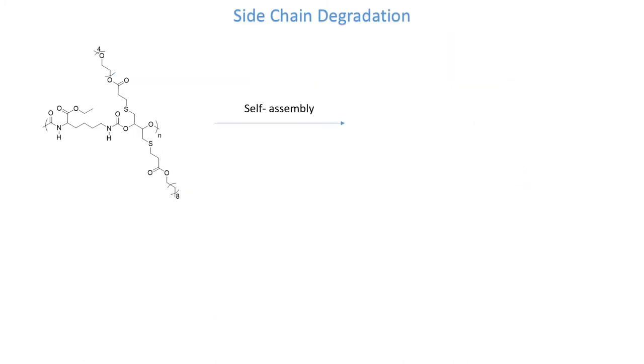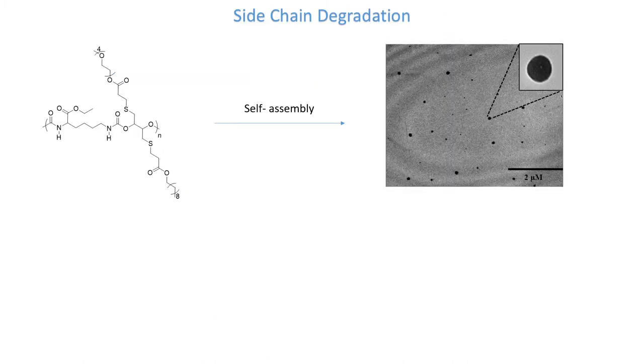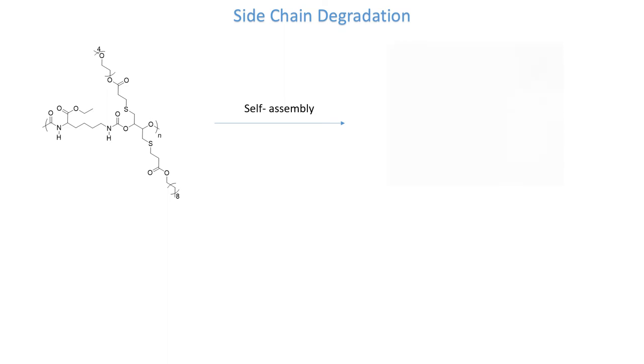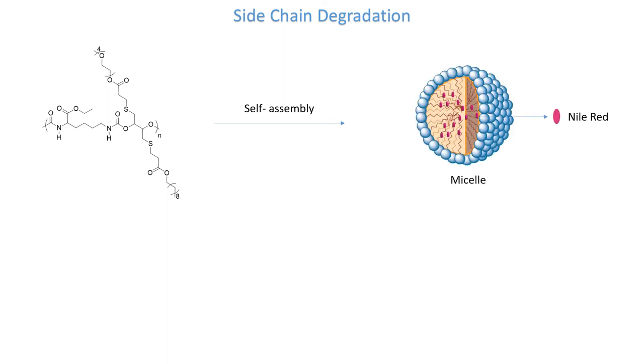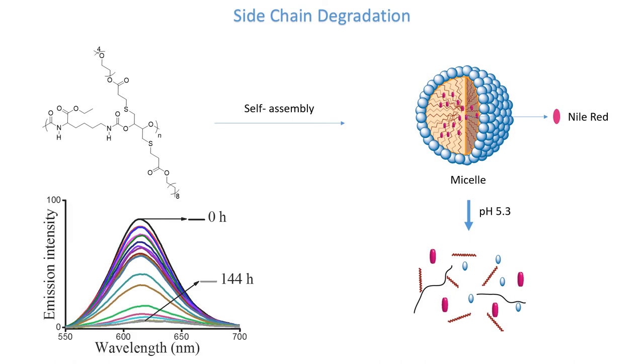The polymer self-assembled in water to form micelle-type aggregates of around 100 nanometers in size, within which a hydrophobic dye, Nile Red, could be non-covalently encapsulated. When the pH was reduced to 5.3, the assembly fell apart, releasing Nile Red as seen from the decrease in its emission intensity.